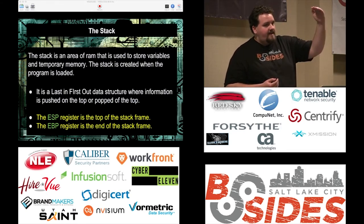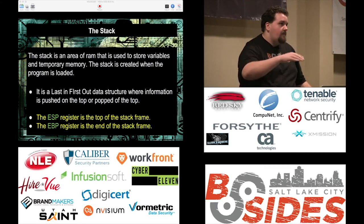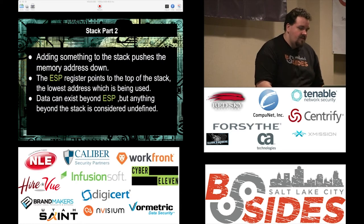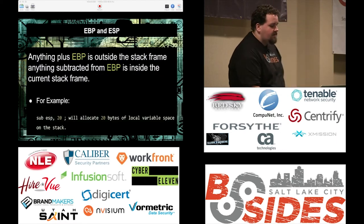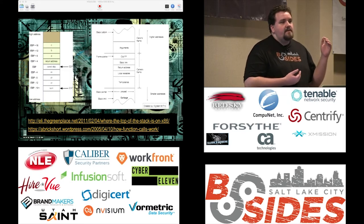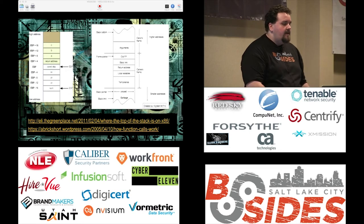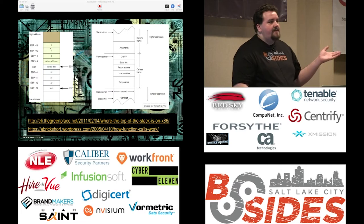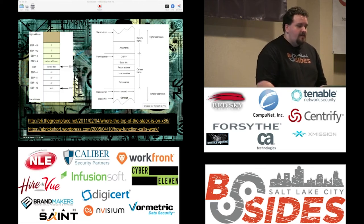ESP marks where the stack starts, and EBP marks where it grows to. With the stack, you're just pushing data on and popping data out. Anything below EBP is the current stack frame — this is where all local variables in your C function are being declared. Anything above is outside your function. This is why functions can access data from outside themselves, but other functions can't get data from within a function they call, because every function call creates a new stack frame allocating more space.